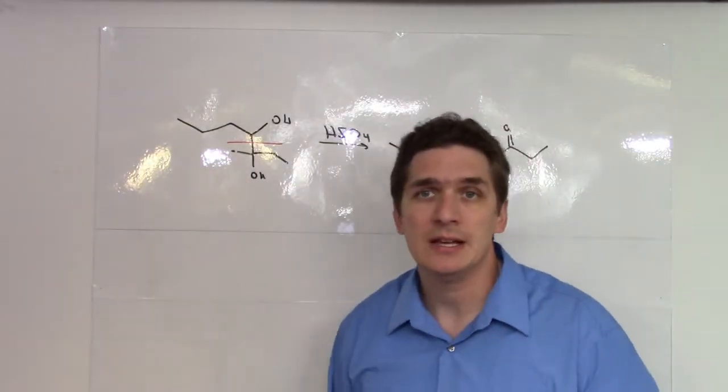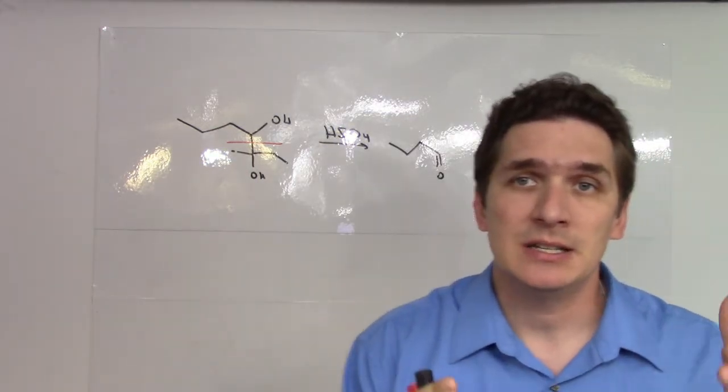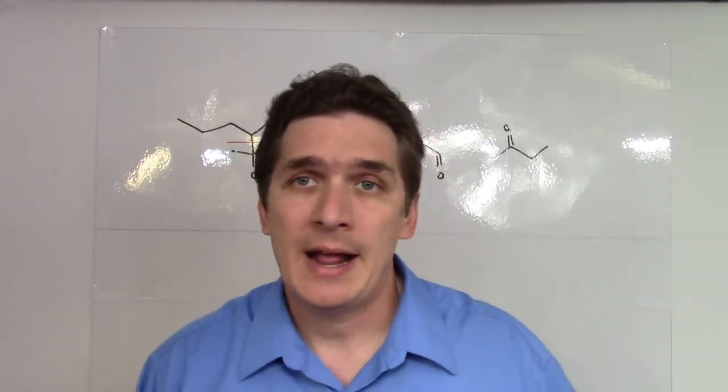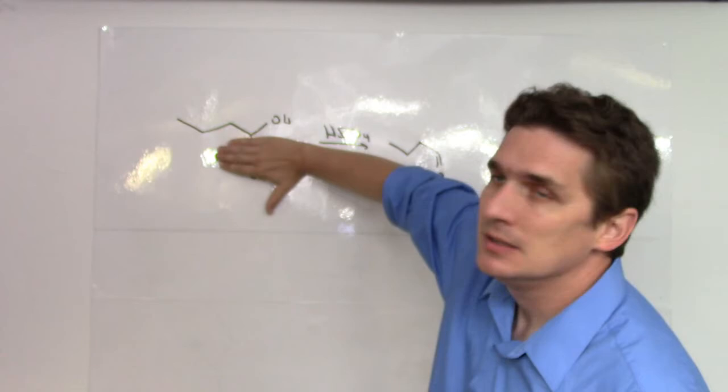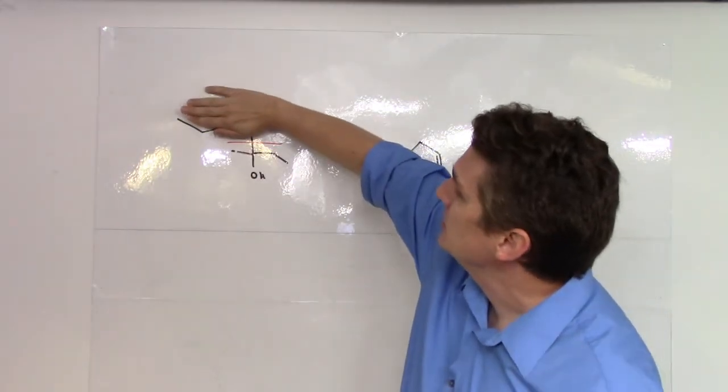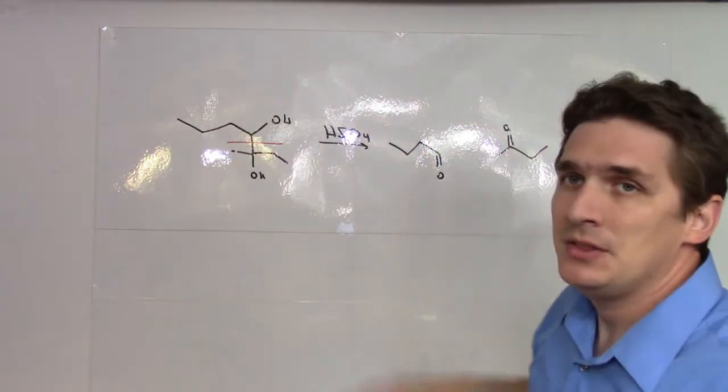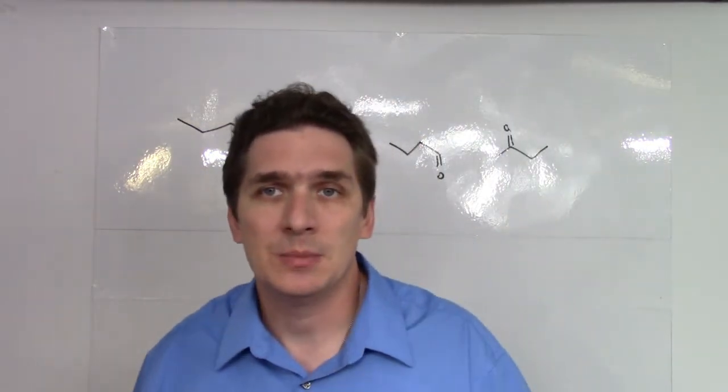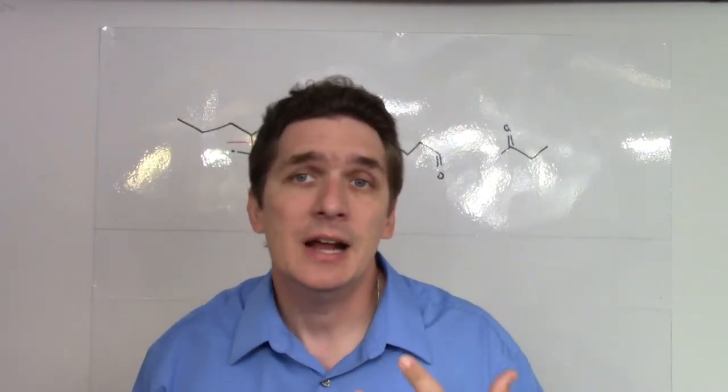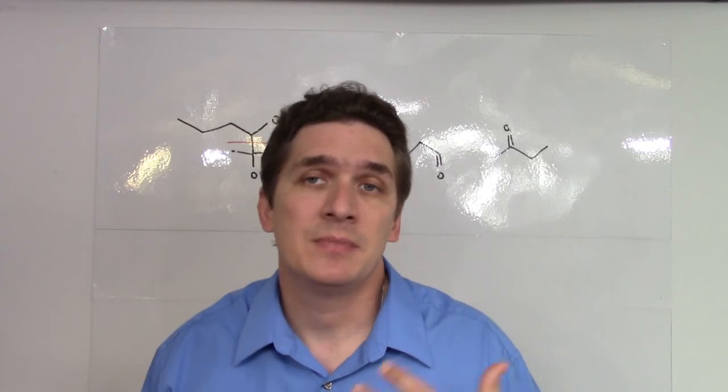Draw a line between the bonds connecting the vicinal diols. Write out the carbon chain as you see without the line connected to it. Put your alcohol on there and then convert your alcohol to a carbonyl, an oxygen carbon double bond. And this will give you the products of the periodate reaction.